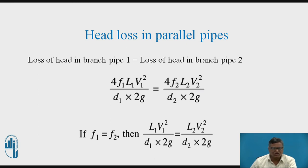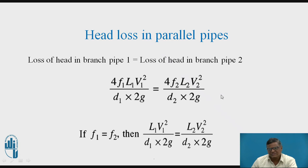Now let us consider head loss in parallel pipes. The loss of head in branch pipe number one is equal to the loss of head in branch pipe number two. On the left hand side: 4F1·L1·V1² / (2G·D1), and on the right hand side: 4F2·L2·V2² / (2G·D2). If F1 equals F2, after cancelling common terms (4, 2G, F), the equation reduces to L1·V1² / D1 = L2·V2² / D2.